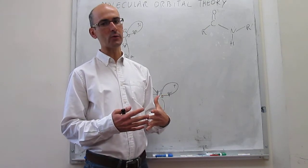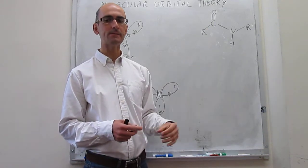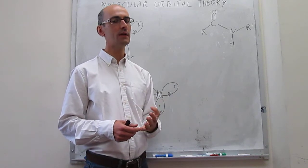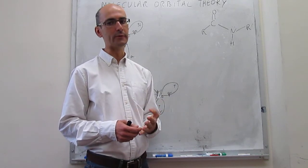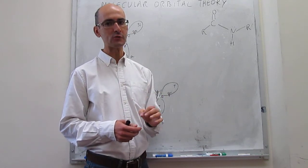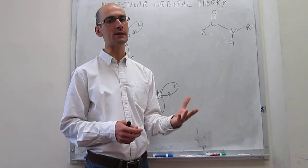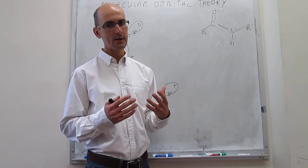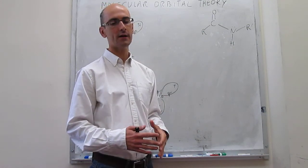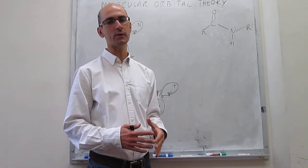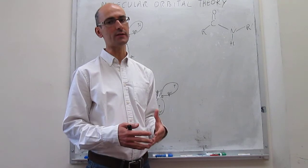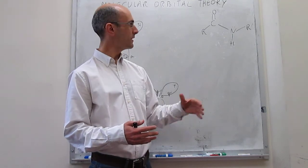The way we're going to explain the bonding in this moiety is by using a hybrid of valence bond theory and molecular orbital theory. First, we'll describe the sigma bonding structure with valence bond theory. Something very important is to recognize what the initial shapes and hybridizations of the atomic orbitals would be.